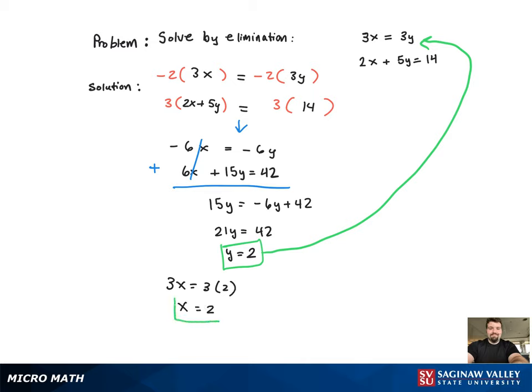And I get x equal to 2. So that's the ordered pair solution, 2 comma 2. And the graph will be provided on the right-hand side.